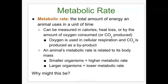An animal's metabolic rate is related to its body mass. Smaller organisms have higher metabolic rates, and larger organisms have lower metabolic rates, partly due to the surface area to volume ratio relative to metabolizing tissue. When you have a larger volume, you're going to have more heat loss during metabolic processes. All energy conversions — whether in a plant during photosynthesis or in an animal converting chemical energy to mechanical energy — are ultimately not 100% efficient, according to the second law of thermodynamics.